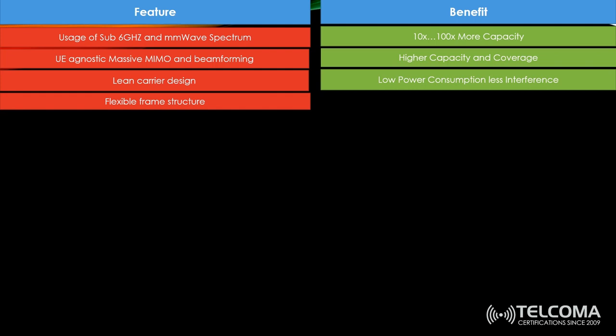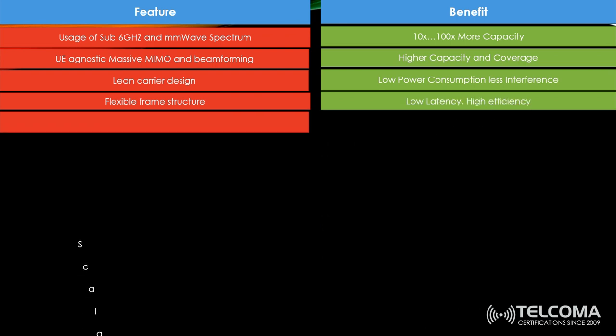Flexible frame structure: in 5G, the 10 ms frame and 1 ms subframe are maintained as in LTE. However, the number of slots is flexible. In LTE we had two slots per subframe, each 0.5 ms. In 5G you can have one, two, or four slots per subframe, and the concept of mini-slots supports lower latency and higher efficiency.